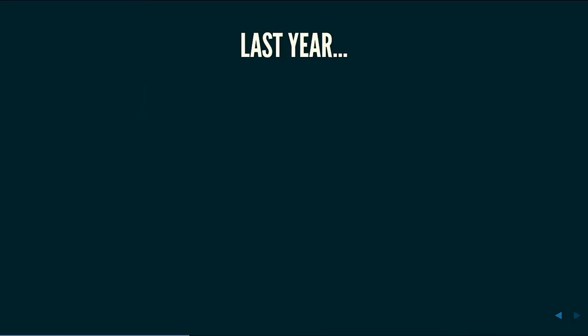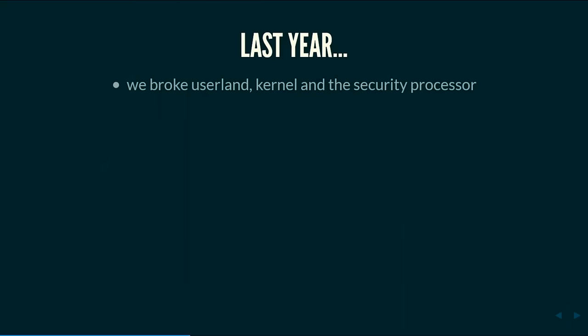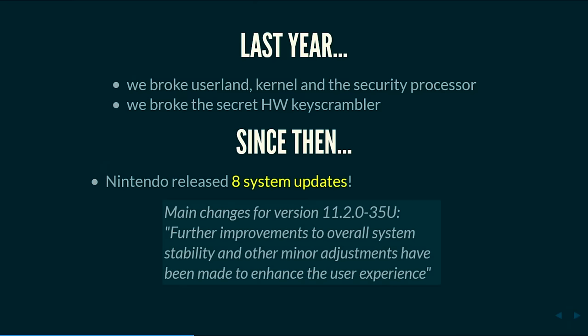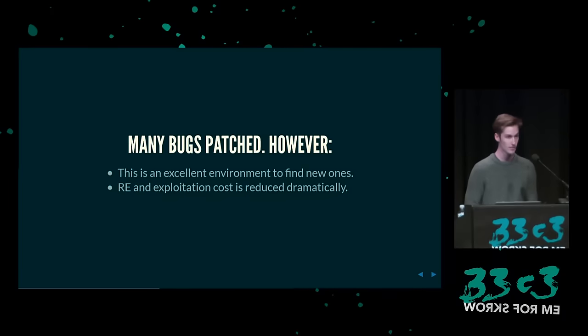So viel zur Wii U — ich gebe jetzt über zu Netwell, der sich über die 3DS äußern wird. Hi alle, ich bin Net. Ich habe mit dem 3DS letztes Jahr gearbeitet. Ich möchte zeigen, wie das mit der Homebrew-Seite bei der 3DS aussieht. Letztes Jahr haben diese Leute den Userland-Kanal und den Sicherheitsprozessor gebrochen, den Hardware-Key-Scrambler kaputt gemacht. Seitdem hat Nintendo viele Sicherheits-Updates herausgebracht und ein Bug-Kopfgeld-Programm angefangen. Es wurden viele Bugs gepatcht, aber wegen des hohen Levels an Exploitation ist es eigentlich recht einfach, neue Bugs und Exploits zu finden.